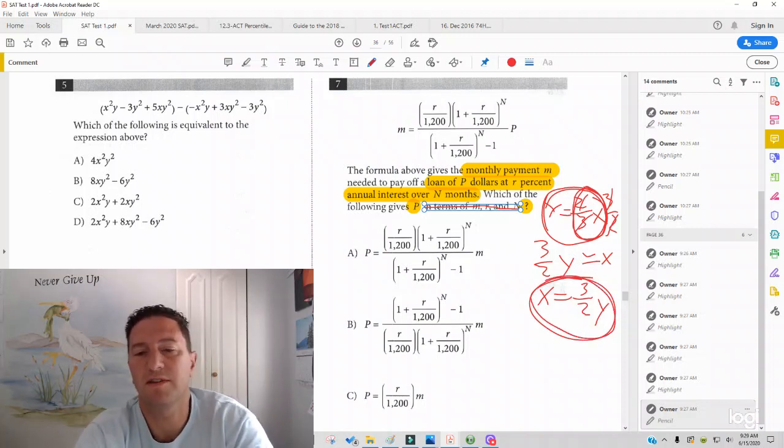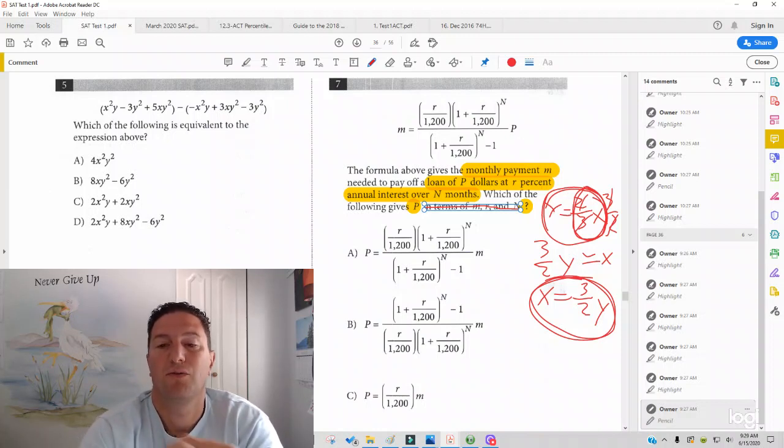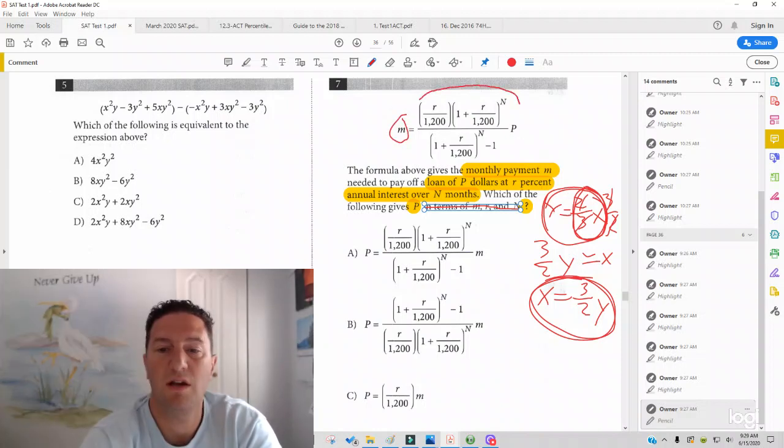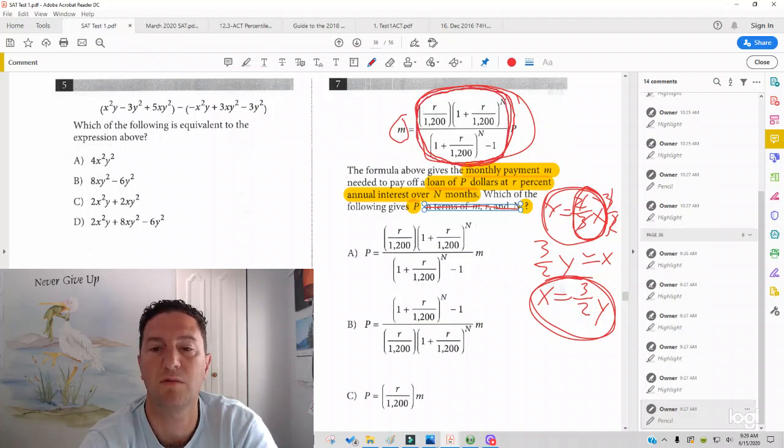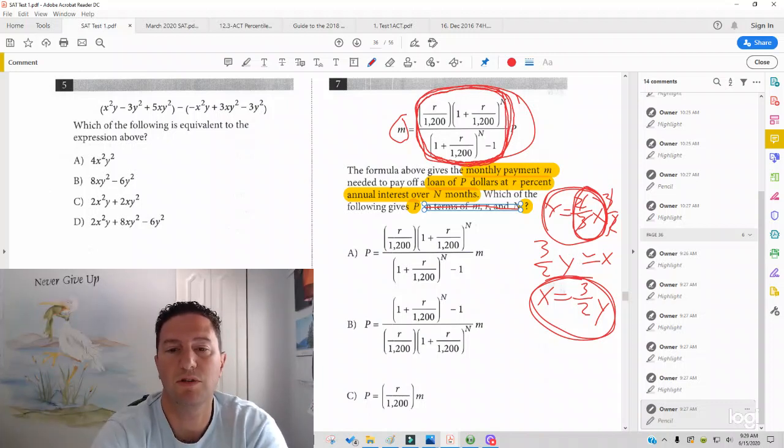In number 7, we have the same problem. It's just a giant fraction. So here we see M is alone, and this giant fraction is stuck to P. So if I want to get P alone, I've got to multiply both sides by the reciprocal of this giant fraction. And so the reciprocal of this giant fraction is going to be stuck to M, and then P is going to be alone.